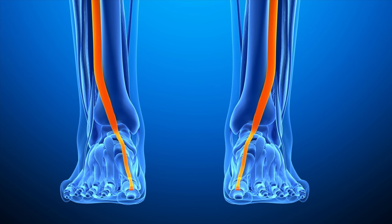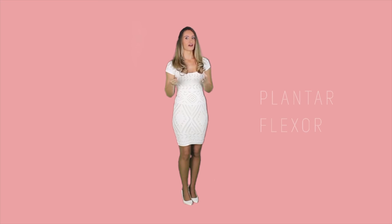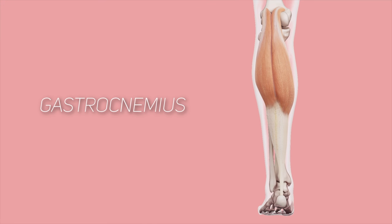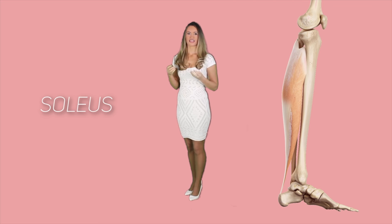Plantar flexors are the other type of foot muscles and consist of several muscles. The first is the gastrocnemius, located posteriorly in the leg, forming a portion of the calf. The gastrocnemius links with the calcaneal tendon, which moves distally to attach to the calcaneus. The gastrocnemius is a powerful flexor that propels the body forward during running or walking, and also causes leg flexion in the knee region.